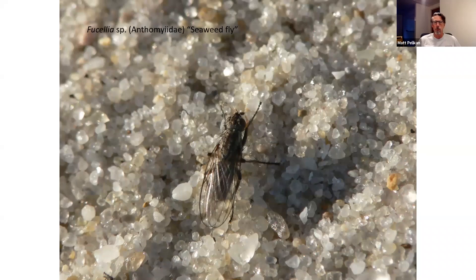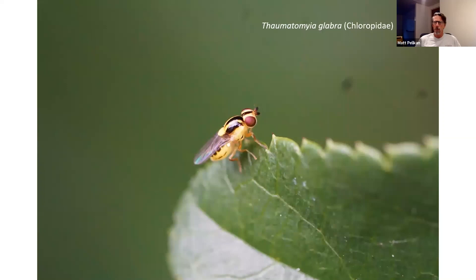A lot of flies have very specific habitat associations. This is a seaweed fly — it lives in the saline environment on a beach, living in the wrack line, with its whole reproductive cycle centered there. They're found year-round at the very edge of the ocean. I've even found them in winter, using the heat from decomposition in the wrack line to remain active. A very specialized fly, even though it doesn't look like anything special — it has evolved to live in a very specific and hostile niche ecologically.